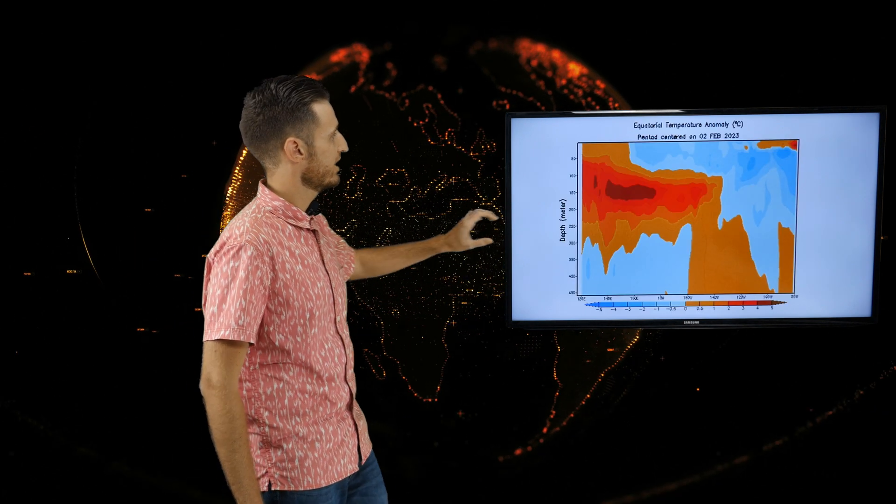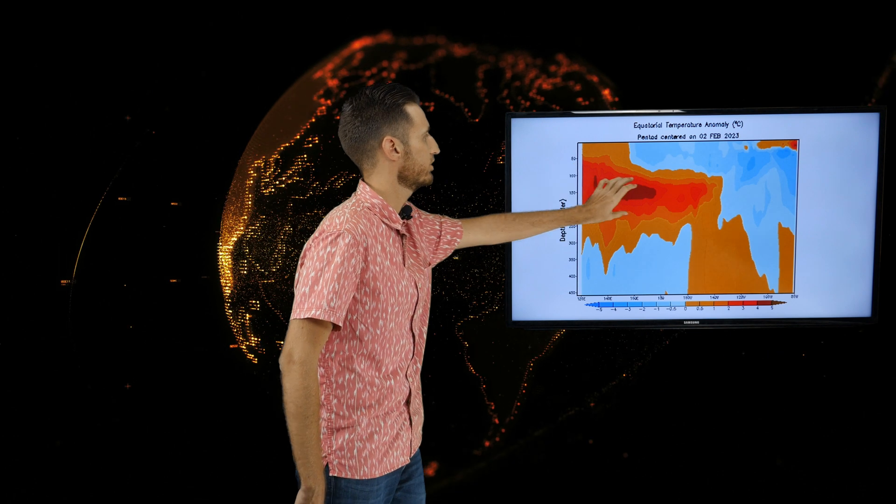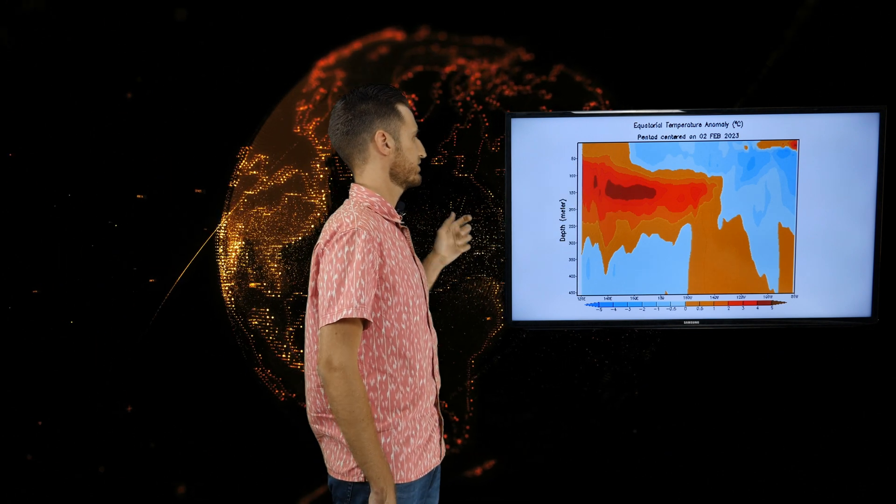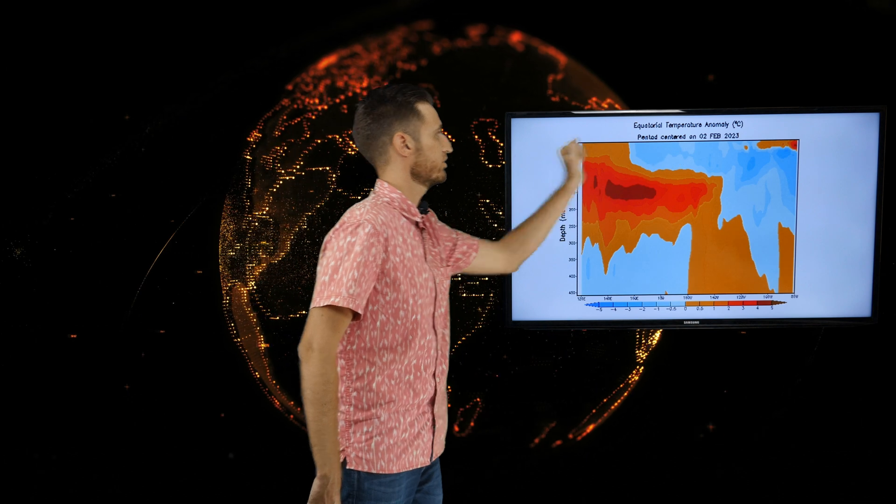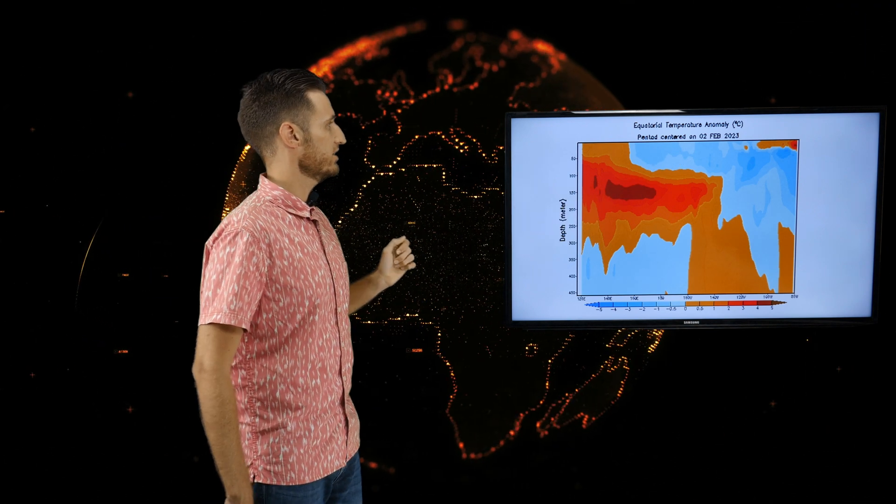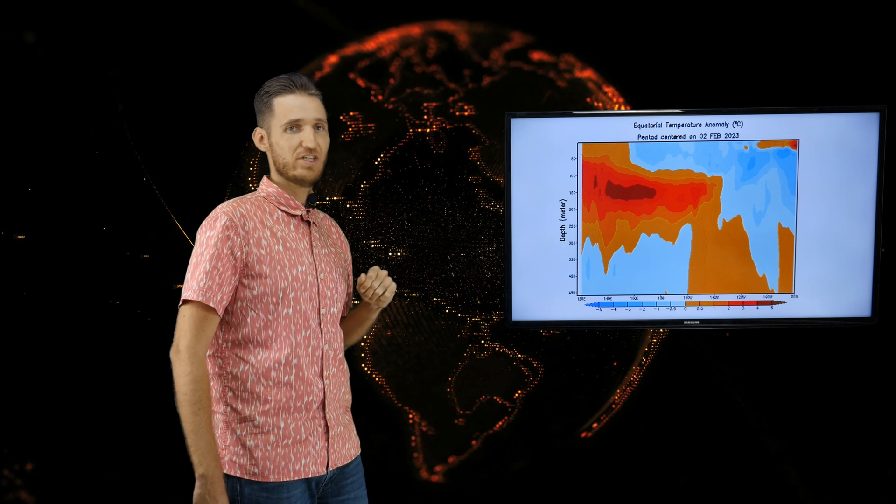And if you see the next graph, you can also see that a pool of warmer waters. In this case, these are positive anomalies. They will be moving slowly towards the eastern Pacific and then rise over the surface of the ocean. And then when those temperatures go up, we will get closer and closer to El Niño conditions.